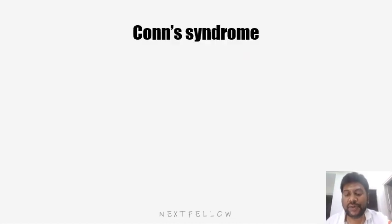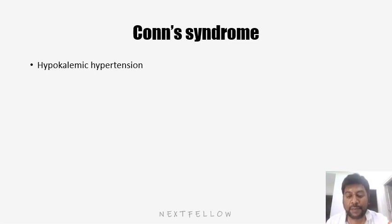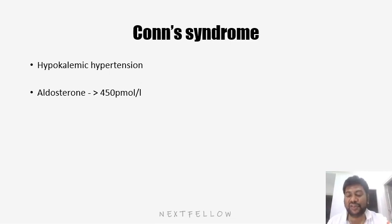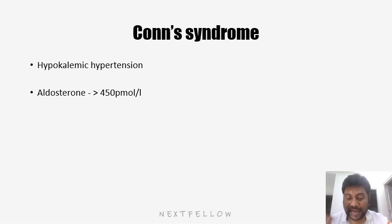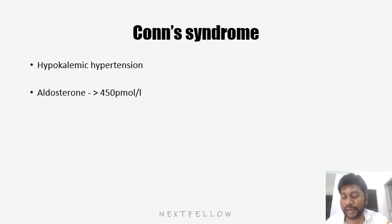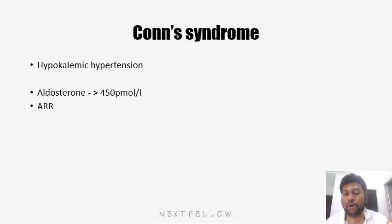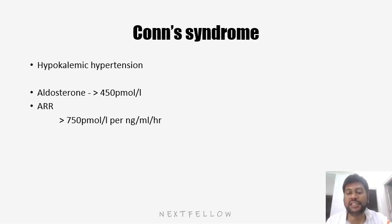Next, we will move on to Khan's syndrome, otherwise called primary hyperaldosteronism. Whenever a patient comes to you with signs of hyperaldosteronism — that means hypokalemia, hypernatremia, and hypertension — it is better to test their aldosterone level. If the aldosterone level is more than 450 picomoles per liter, then you can confirm the patient is suffering from hyperaldosteronism. However, sometimes excess aldosterone may be due to excess renin production from other causes, meaning there is no pathology with the adrenal gland. Primary hyperaldosteronism means there should be a problem in the adrenal gland producing excess aldosterone. Along with aldosterone estimation, you can also go for aldosterone-renin ratio estimation. When the aldosterone level is more than 450 picomoles per liter and the ratio is more than 750 picomoles per liter per nanogram per ml per hour, then you can suspect primary hyperaldosteronism.